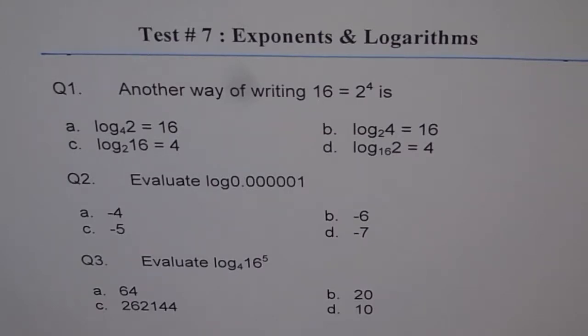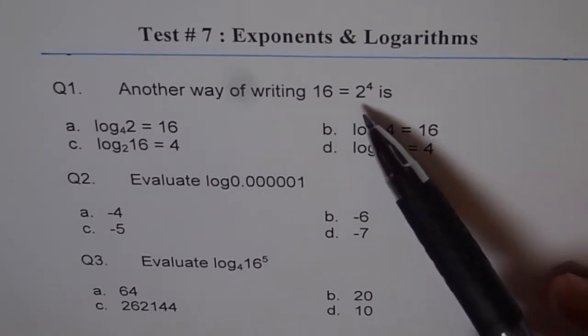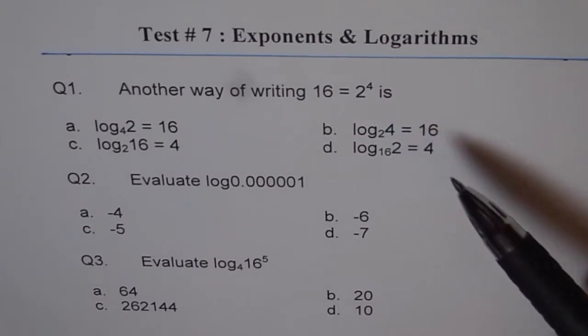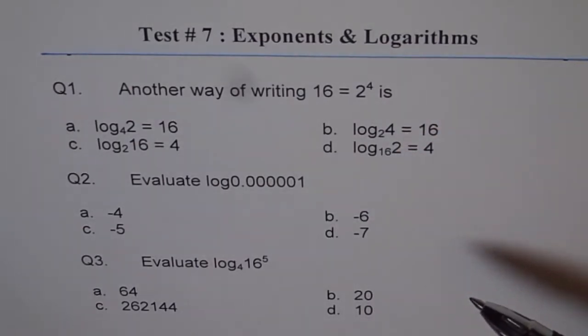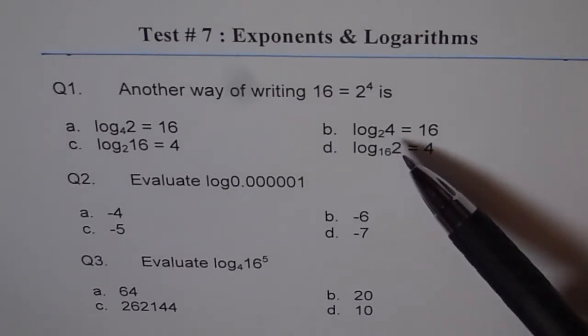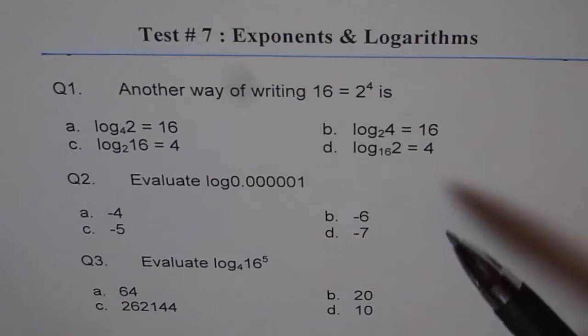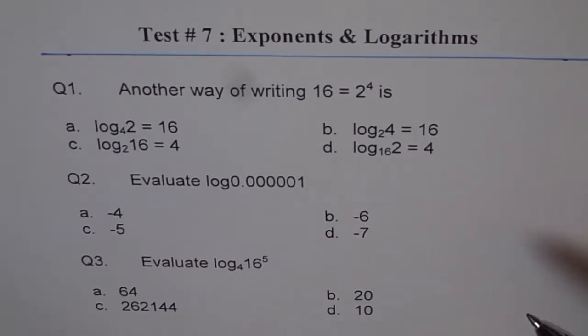Question 1. Another way of writing 16 equals 2 to the power of 4 is - we have 4 different choices. The choices are log to the base 4 of 2 equals 16, log to the base 4 equals 16, log to the base 16 of 2 equals 4, and log to the base 2 of 16 equals 4.